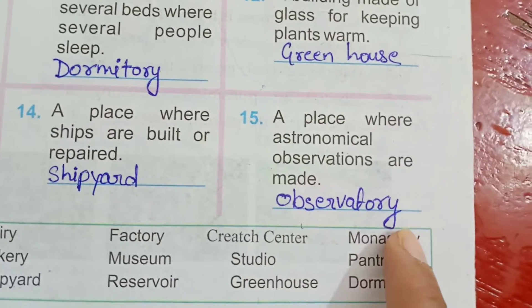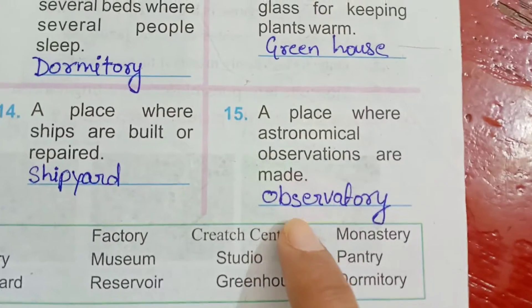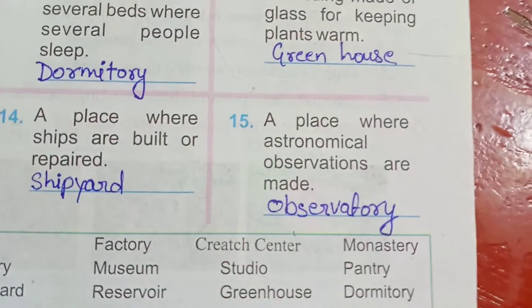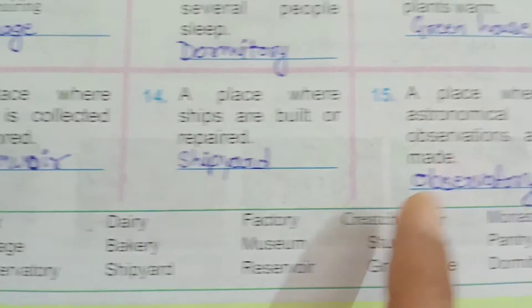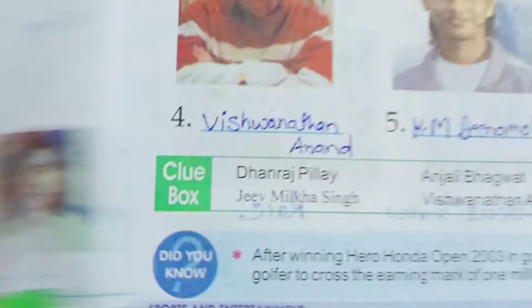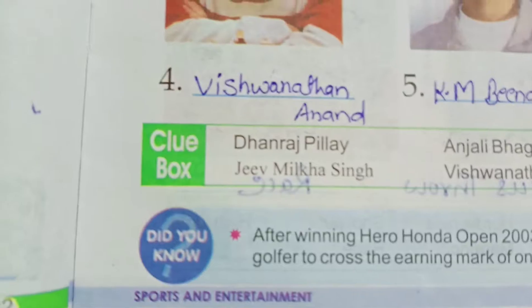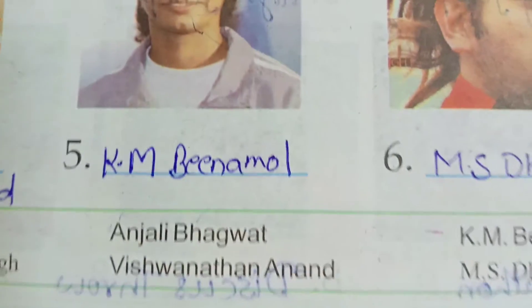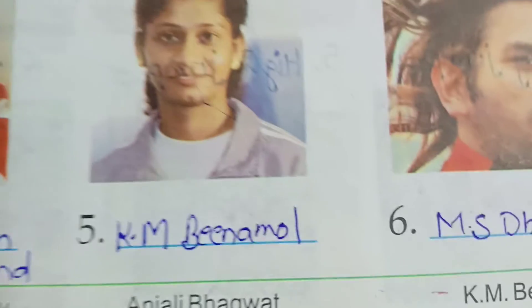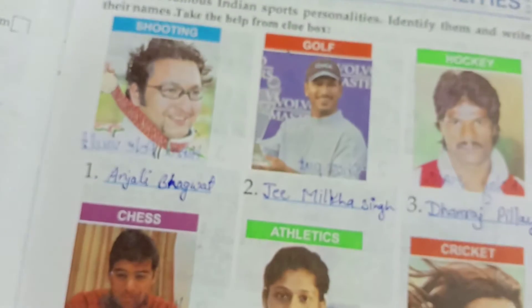A place where astronomical observations are made — that is called an observatory. So you can tell the names of these places, and then you can start Unit 3.